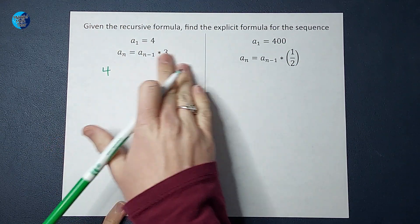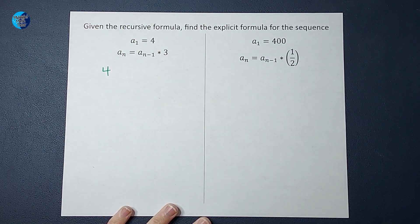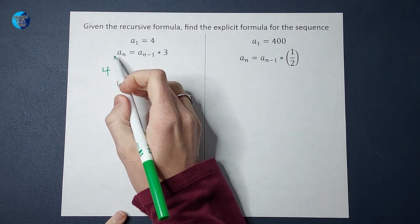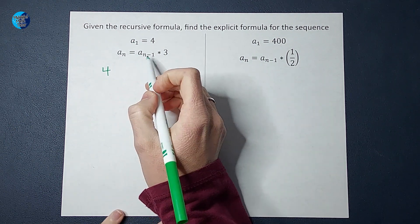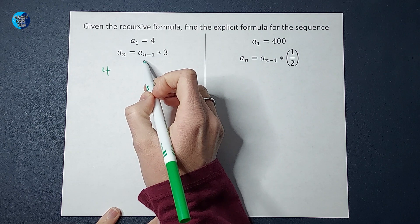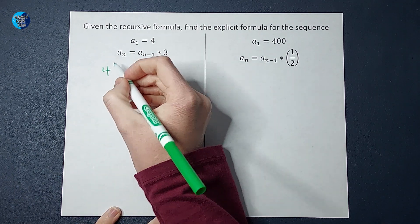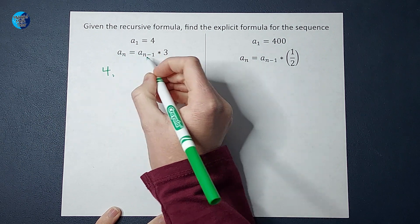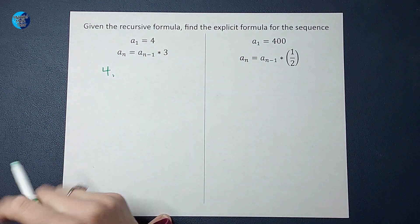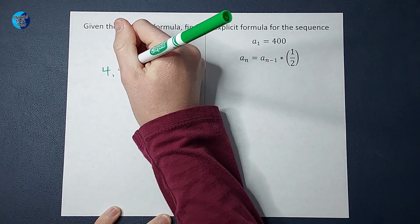And then this formula is going to be what helps me find the rest of the numbers. So this is telling me whatever number you want to find, you take the one before it and multiply by three. So if I want to find the second term, I take the first term and multiply it by three. So four times three would give me 12.